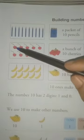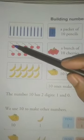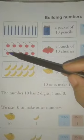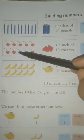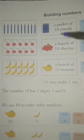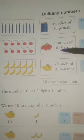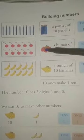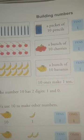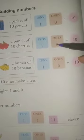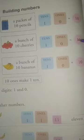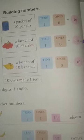Now, how many cherries are there? 1, 2, 3, 4, 5, 6, 7, 8, 9, 10. There are 10 cherries — a bunch of 10 cherries. 1 tens and 0 ones is equal to 10.